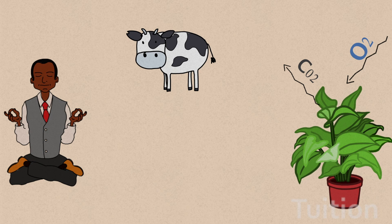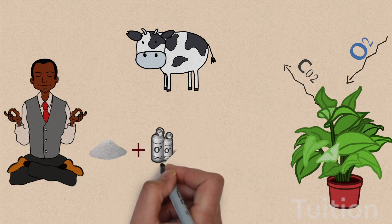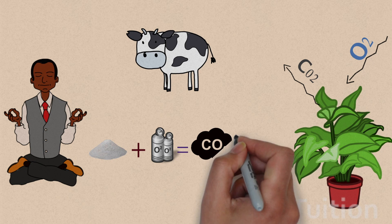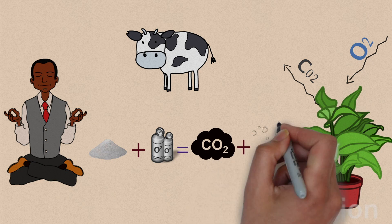The process of respiration needs glucose to start the reaction which is then converted into energy while producing carbon dioxide and water as by-products.